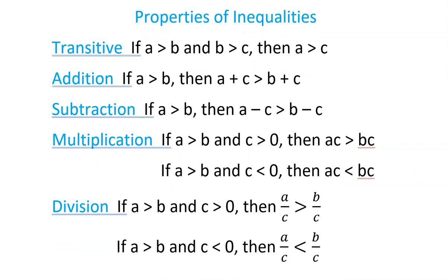Here are some properties of inequalities — you can write these down in your notebook. You need to know how to use and identify them. The transitive property: if A is greater than B and B is greater than C, then A is greater than C. For the addition property: if A is greater than B, then adding the same quantity to both sides gives A plus C is greater than B plus C. Subtraction is the same — subtracting that same quantity from both sides maintains the inequality.